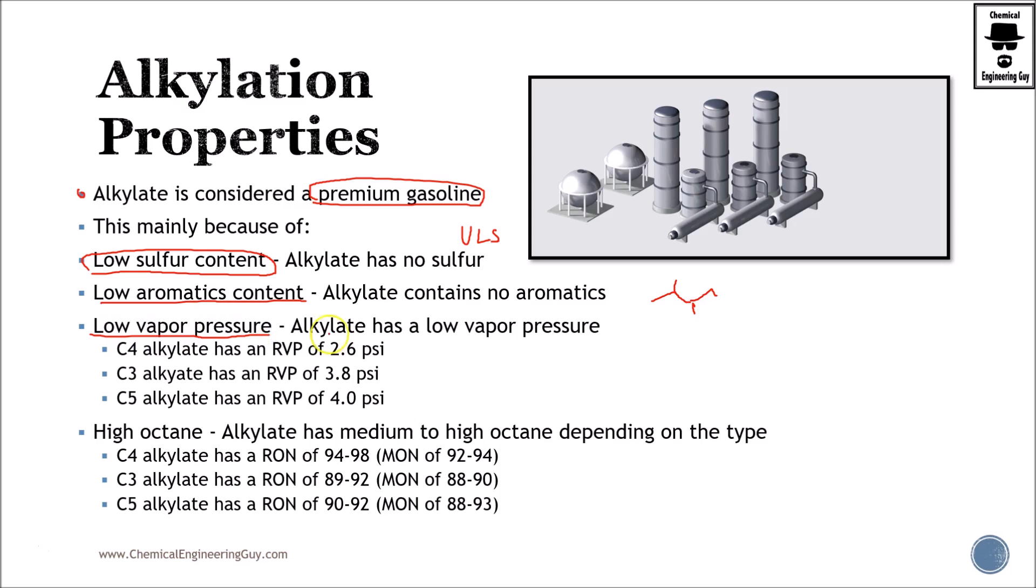It also contains low vapor pressure, which makes it very convenient, especially because when we add premium gasolines such as polymer gasoline or isomer gasoline like naphthas, they will not have a correct vapor pressure. Addition of alkylate will fix this RVP. You can see C3, C4, and C5 have the following RVPs.